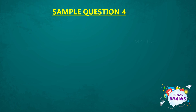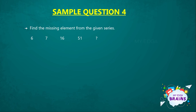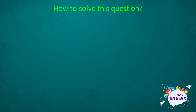Sample question 4. The question is: find the missing element from the given series — 6, 7, 16, 51, and the next element is missing that we need to find. The given options are: option A 168, option B 186, option C 208, and option D 280. It's a bit difficult question. Let's see how we can solve it.